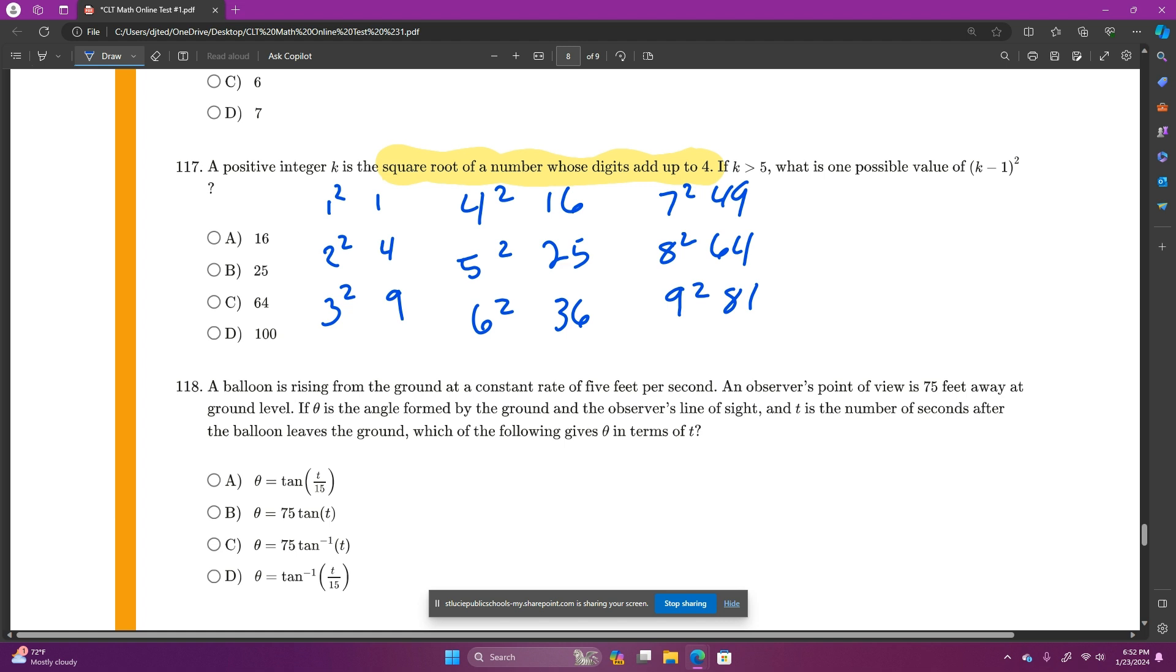And I'm looking here at these numbers, and I'm looking for my perfect squares for the digits to add up to 4. So this is just 1, this is 4, but k has to be greater than 5. So it can't be any of these because these are all 5 and less. 3 plus 6 is 9, 4 plus 9 is 13, 6 plus 4 is 10, 8 plus 1 is 9.